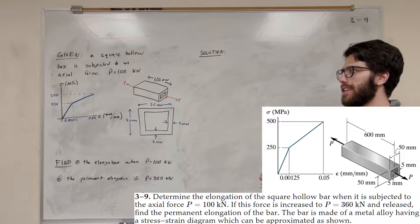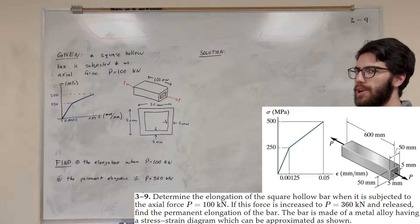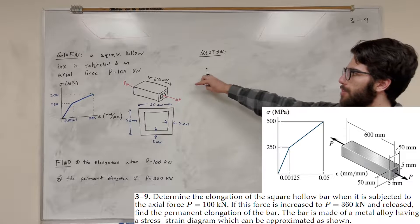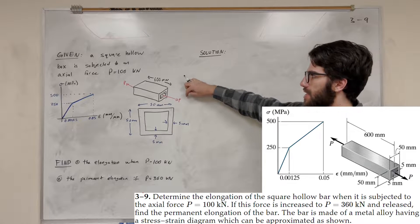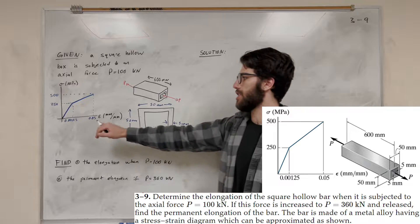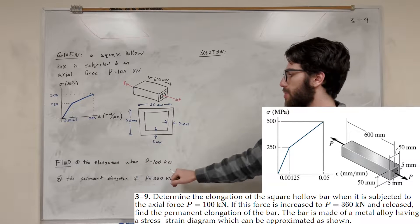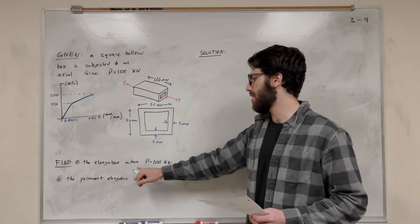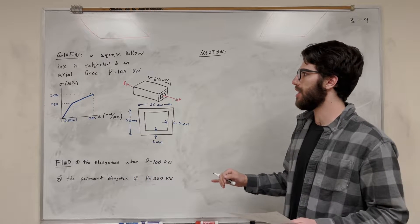What's up, top gang? Welcome back to Mechanics and Materials. So we've got this pretty long problem here, but let's go ahead and get started. We have this square hollow box subjected to an axial force of P, and we also have this stress-strain diagram. Our goal for problem one is to find the elongation when the force is equal to 100 kN.